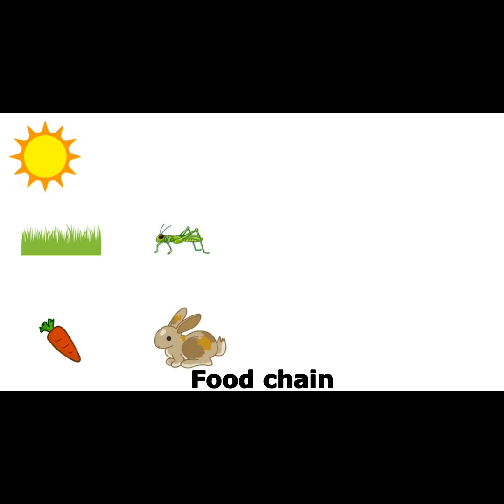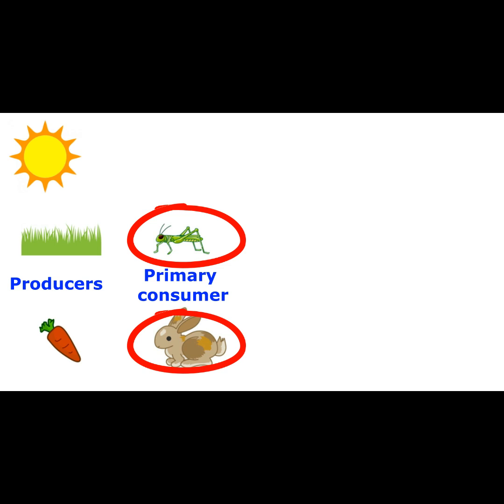The second link of any food chain is occupied by a plant-eating animal, or herbivore. These plant-eating herbivores are called primary consumers.